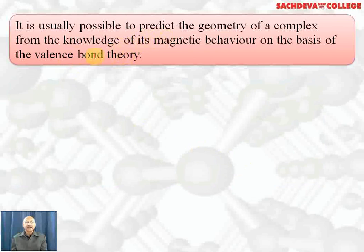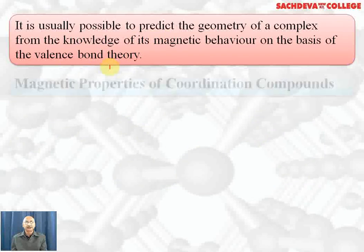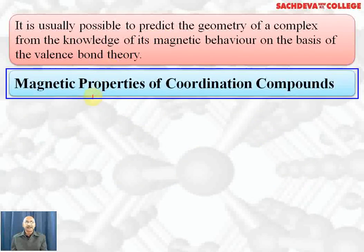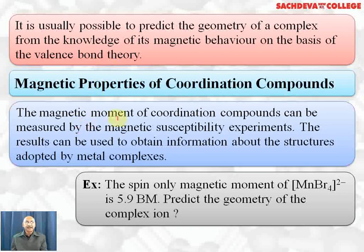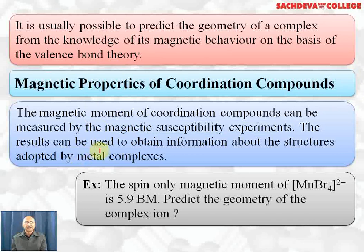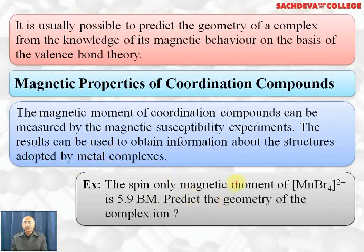It is usually possible to predict the symmetry of a complex from the knowledge of its magnetic behavior on the basis of Valence Bond Theory. The magnetic moment of coordination compounds can be measured by magnetic susceptibility experiments, and the results can be used to obtain information about the structure adopted by metal complexes.